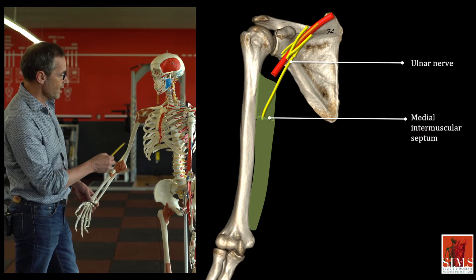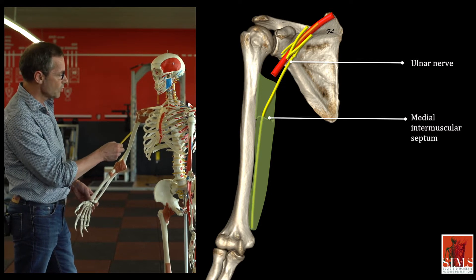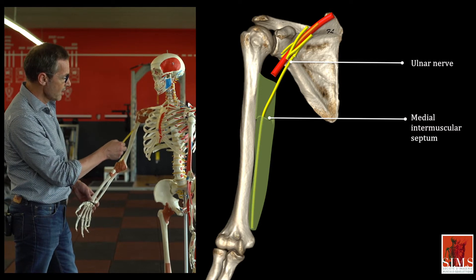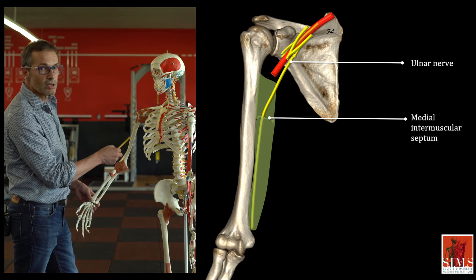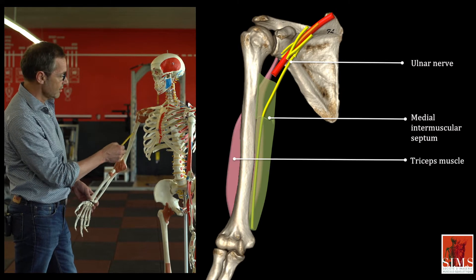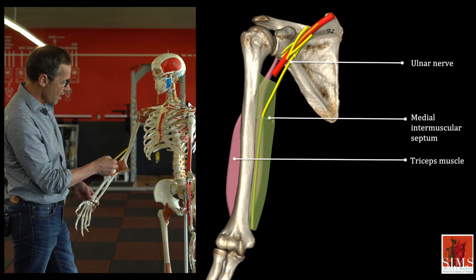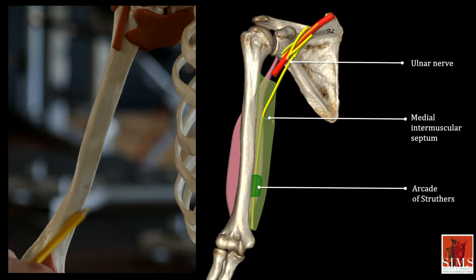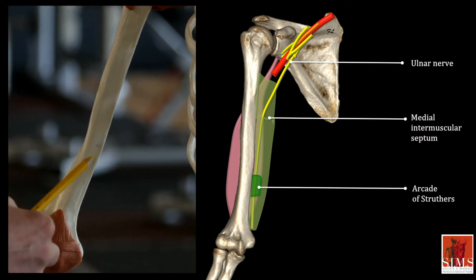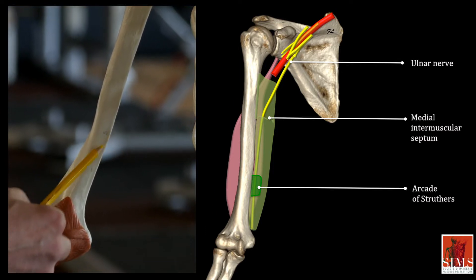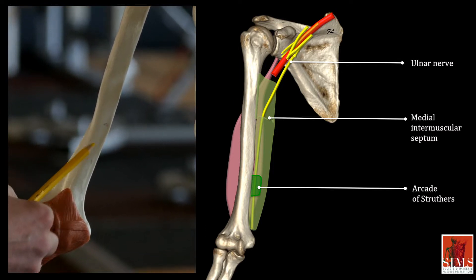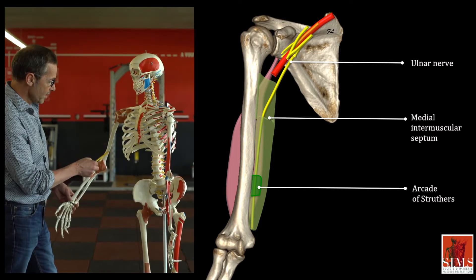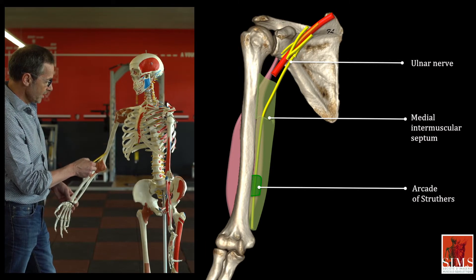At some point it pierces the medial intramuscular septum and enters the posterior compartment, approximately eight centimetres proximal to the medial epicondyle. In some patients it crosses a fibrous arcade, the arcade of Struthers, where it may be subject to stress.